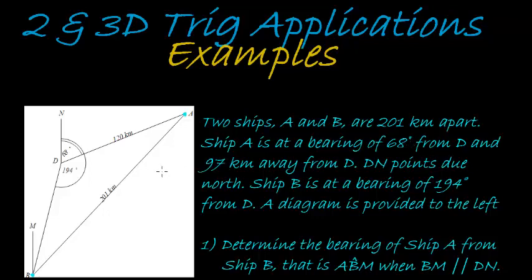What bearing means is: if I were to head north from a point D, and from that point I head in the direction of my object — in this case the ship — then the angle that these two vectors make is called the bearing. The bearing is the angle that you make with north from a certain point. So the bearing from point D of A is 68 degrees, the angle it makes with north, and D endpoints due north.